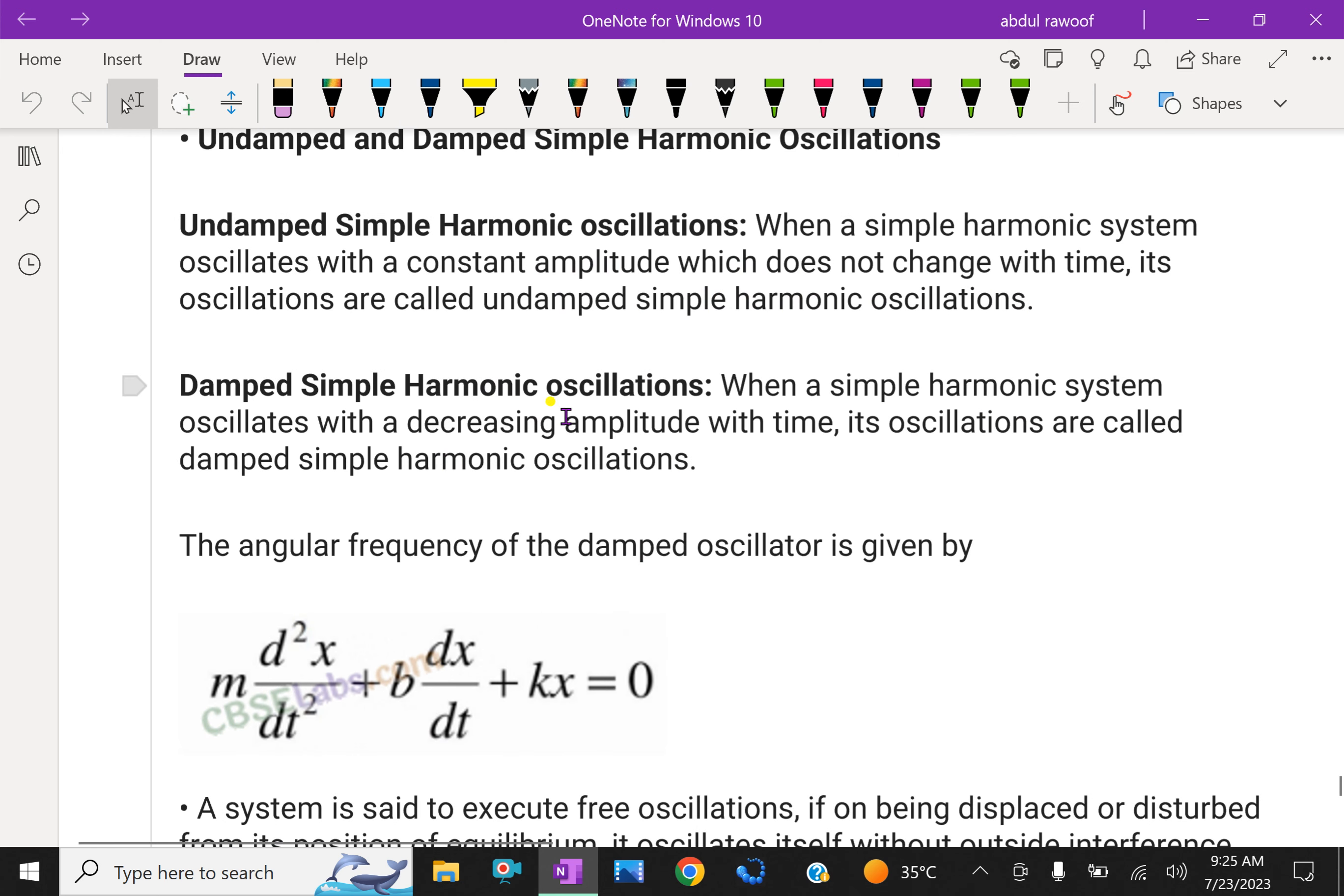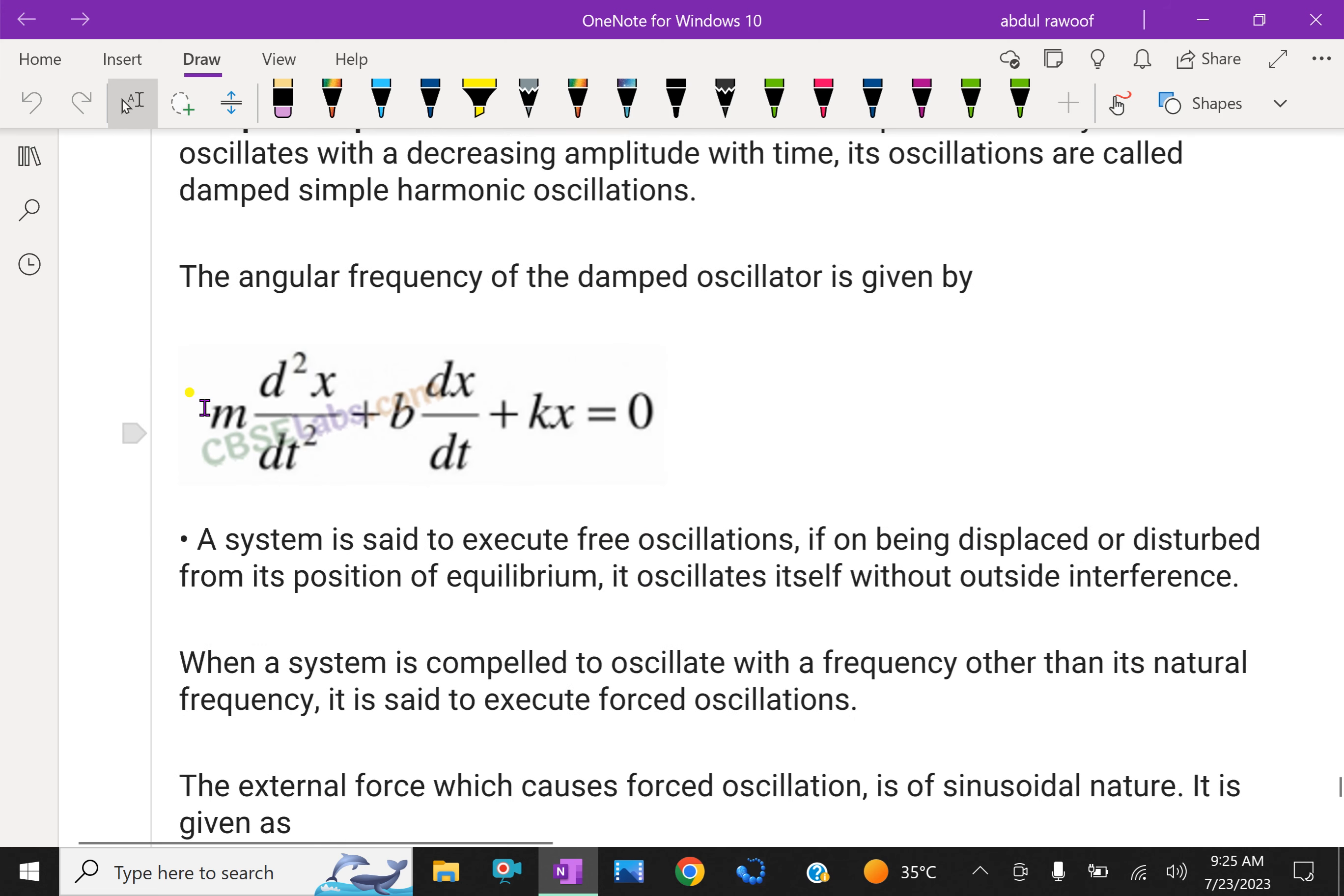Damped simple harmonic oscillations means when a simple harmonic system oscillates with a decreasing amplitude with time. Its oscillations are called damped simple harmonic oscillations. The angular frequency of the damped oscillator is given by a differential equation: M(d²x/dt²) + B(dx/dt) + kx = 0.